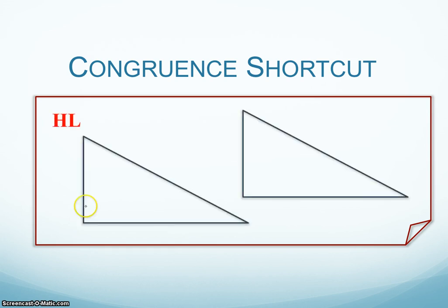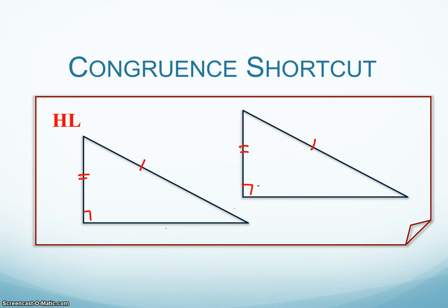The next one is hypotenuse-leg, and this has to do specifically with only right triangles. So if you have a right triangle and you know that the hypotenuse of the two right triangles are congruent and one of the legs — one of the other sides — then in a hypotenuse and a leg of a right triangle, of course those 90-degree angles are also congruent. With this hypotenuse-leg conjecture, we know these two triangles must be congruent. And that's the last shortcut. So to show that two triangles are congruent, we can use: hypotenuse-leg, angle-angle-side, angle-side-angle, side-side-side, and side-angle-side.